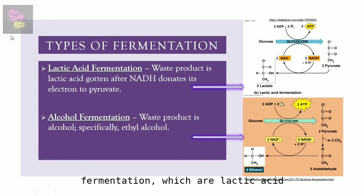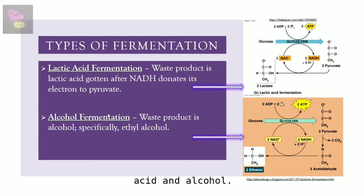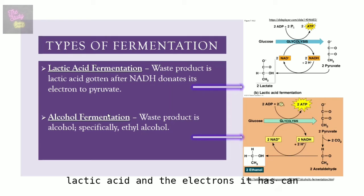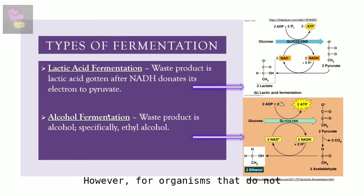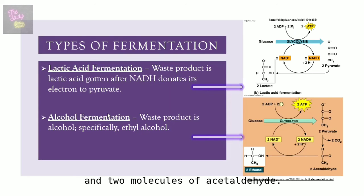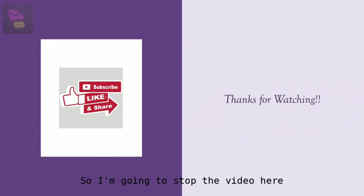There are two types of fermentation: lactic acid fermentation and alcohol fermentation, named after their specific waste products — lactic acid and alcohol. In lactic acid fermentation, after NADH donates electrons to pyruvate, two lactate molecules are produced — one from each pyruvate. In alcohol fermentation, pyruvate accepts electrons from NADH and is converted to two molecules of CO₂ and two molecules of acetaldehyde, which is an intermediate that is then converted to ethanol.